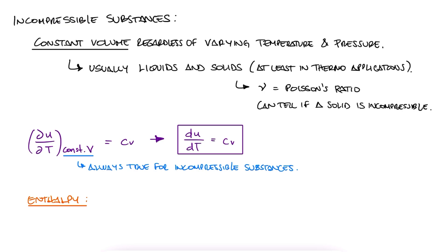Enthalpy, on the other hand, varies with temperature and the term pv. We differentiate this expression, yielding dh equal du plus pdv plus vdp, we use the chain rule there, and for an incompressible substance, meaning no change in volume, pdv is 0.